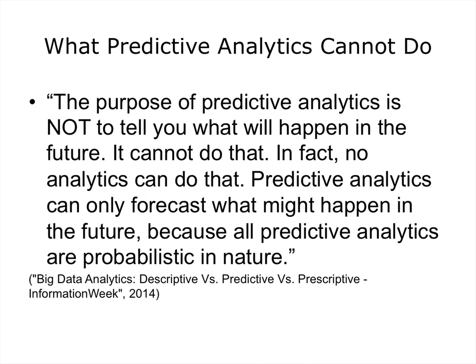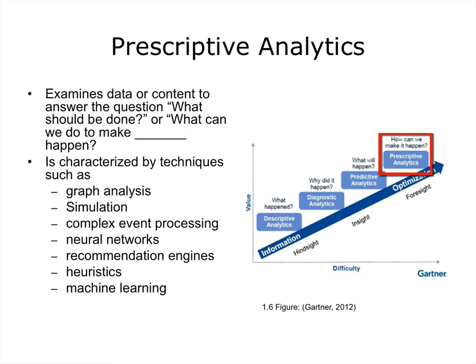This brings us to the highest level of analytics, which is prescriptive analytics. Gartner defines prescriptive analytics as a form of advanced analytics which examines data or content to answer the question, what should be done, or what can we do to make something happen? It is characterized by techniques such as graph analysis, simulation, complex event processing, neural networks, recommendation engines, heuristics, and machine learning.